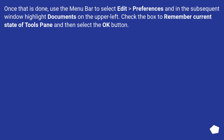Once that is done, use the menu bar to select Edit > Preferences, and in the subsequent window highlight Documents on the upper left. Check the box to remember the current state of the tools pane, and then select the OK button.